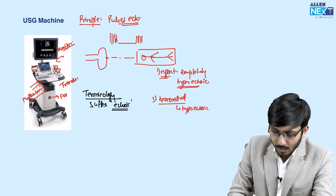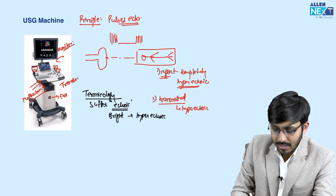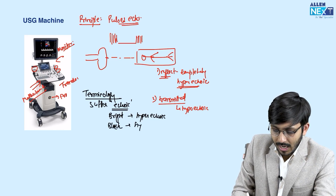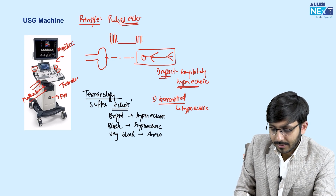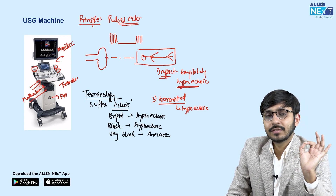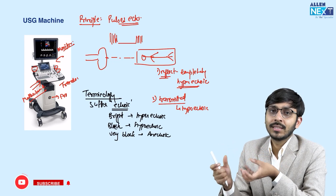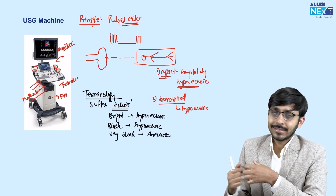All structures which appear bright are termed hyperechoic on ultrasound. Those which appear black are called hypoechoic, and those which appear very black are called anechoic. These are the basic terminology. In CT, we use the suffix 'dense' — hyperdense, hypodense. In MRI, we use the suffix 'intense' — hypointense, hyperintense respectively.